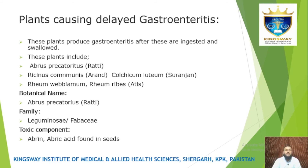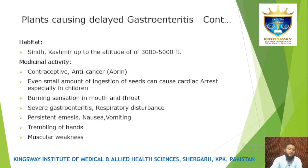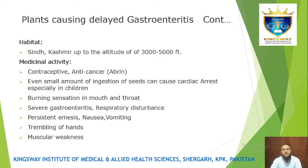Abrus precatorius is found in Kashmir at an altitude of 3000 to 5000 feet. Its medicinal activities include use as a contraceptive and anti-cancer agent. Even small amounts of ingestion can cause cardiac arrest, burning sensation in the mouth, severe gastrointestinal irritation, respiratory disturbances, persistent emesis, nausea, vomiting, trembling of hands, and muscular weakness.